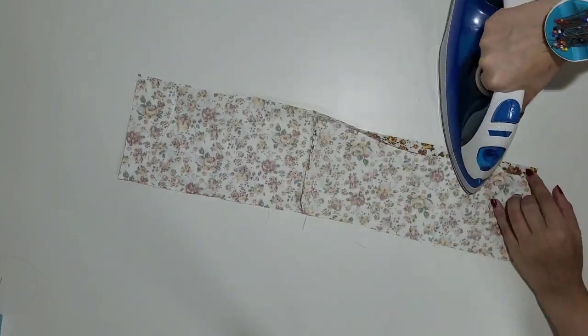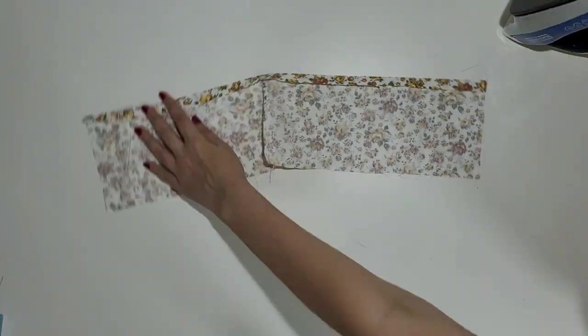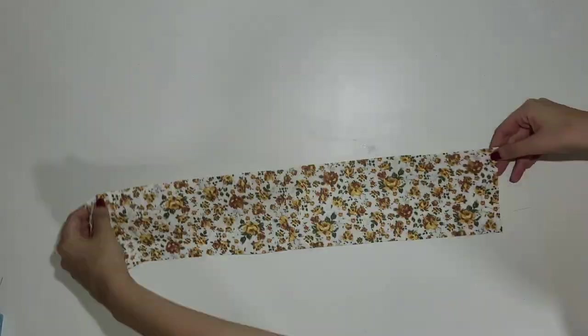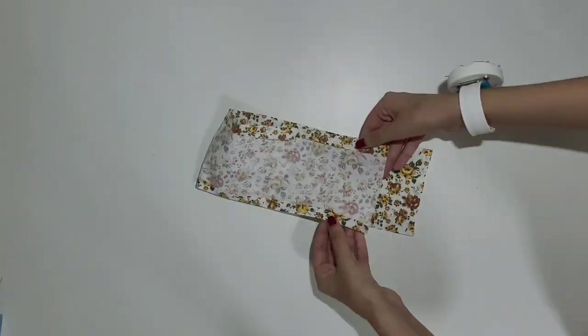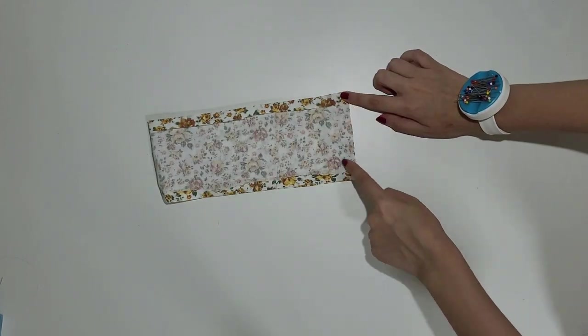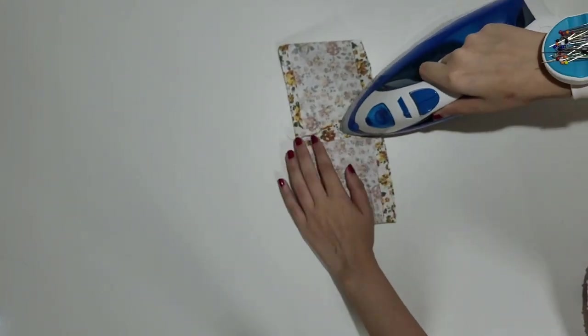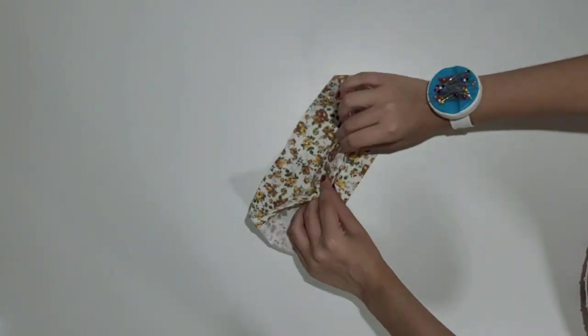Fold the edges inside one centimeter. Use the iron to help you. Then sew the edges right sides together. After sewing, open the seam and fold the scrunchie in half.